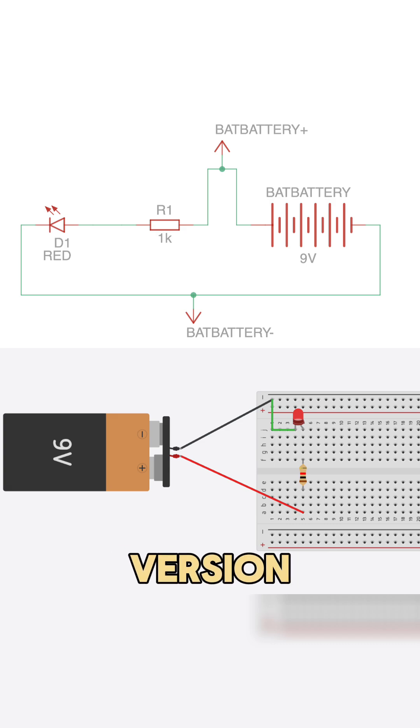In the simplest version, the battery connects to the resistor, then to the LED, and back to the battery's negative terminal. That's a closed circuit, current flows, and the LED lights.